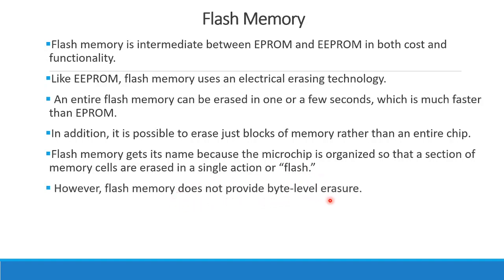Flash memory does not provide byte-level erasure. In EEPROM you can erase at the byte level, but in flash memory you erase at the block level. Flash memory is faster than EPROM in erasing and is lower cost than EEPROM, while offering block-level erasing capability.